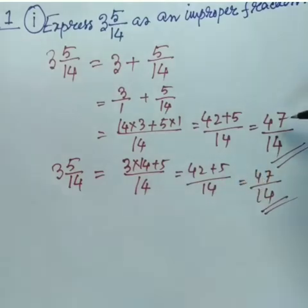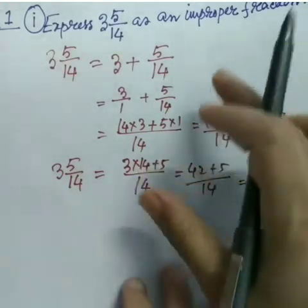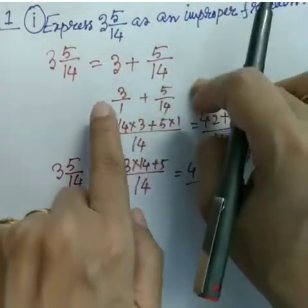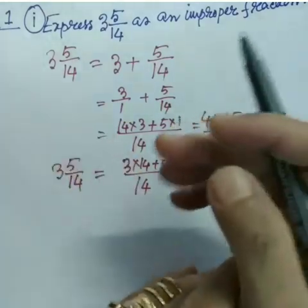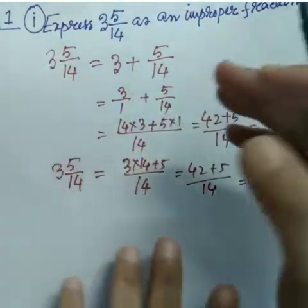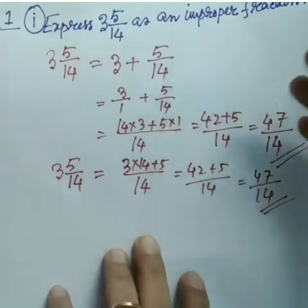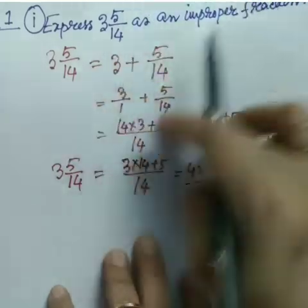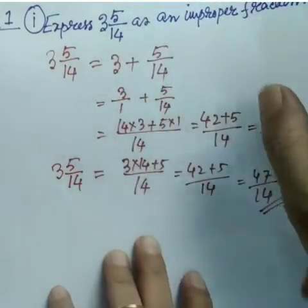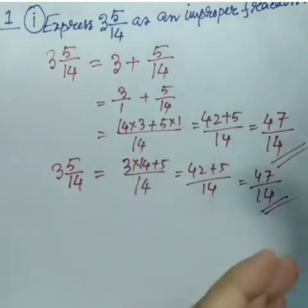47/14 is an improper fraction because the numerator is greater than the denominator. I did the elaborated method first to show you how it happens, because in maths understanding the root of the sum is very much essential.